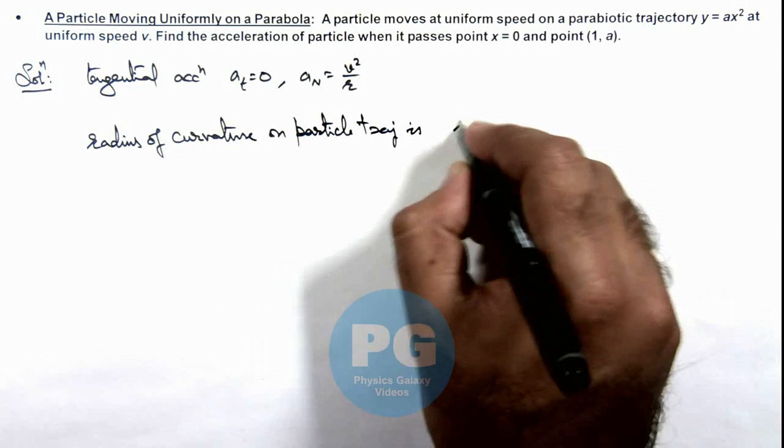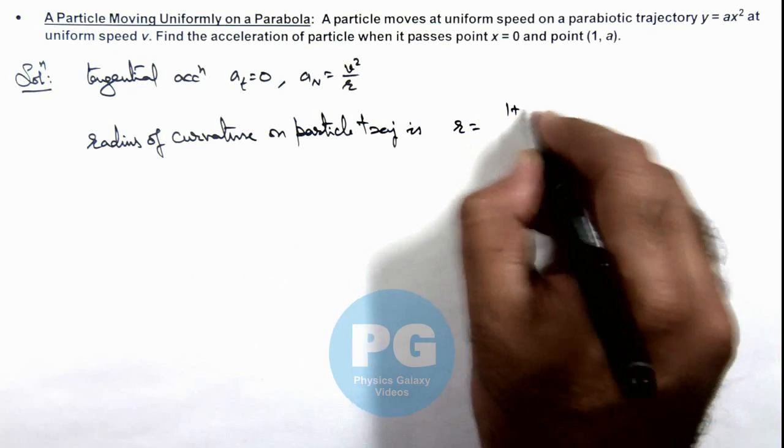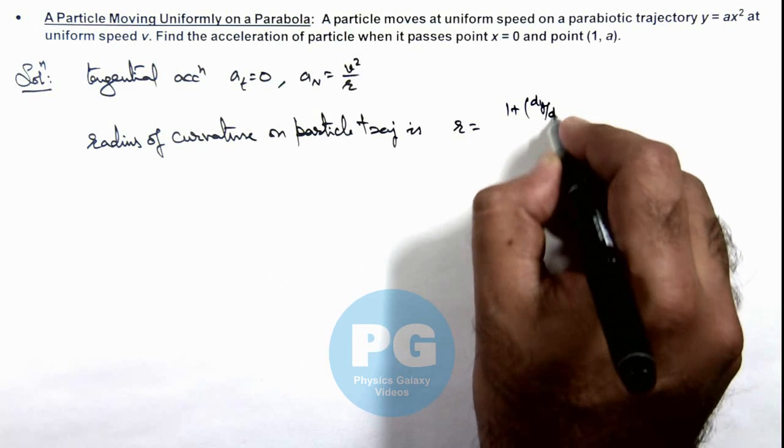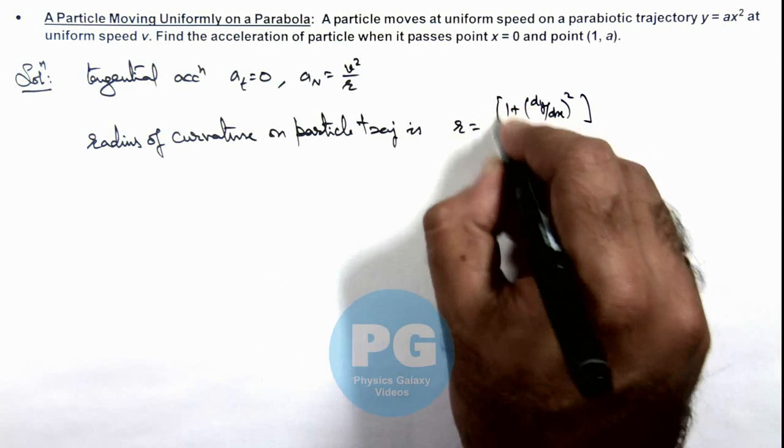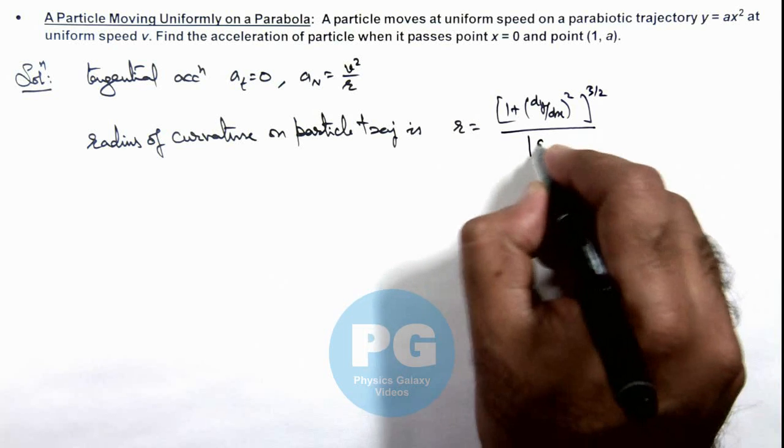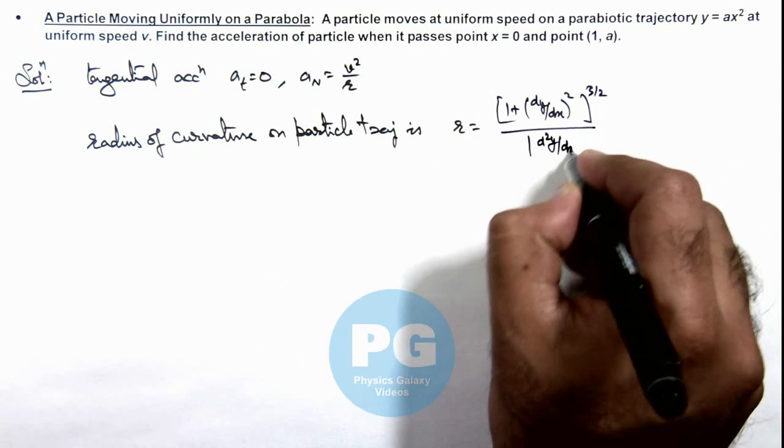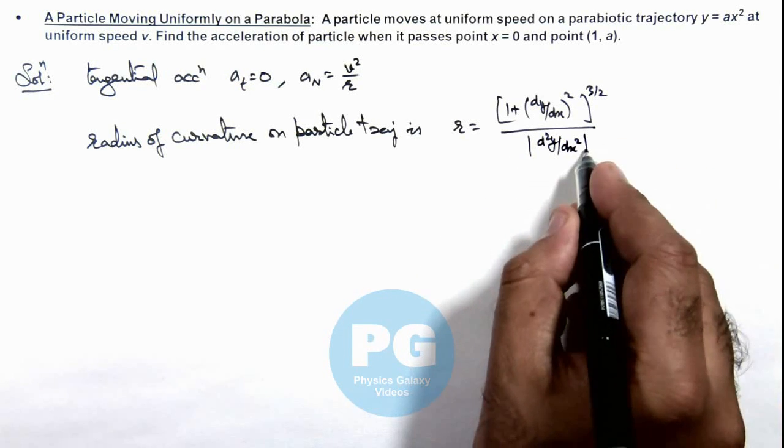This is given as [1 + (dy/dx)²]^(3/2) divided by the modulus of d²y/dx². This we already studied in concept videos.